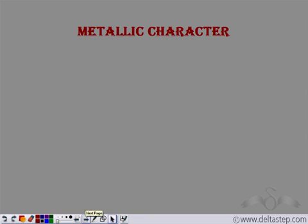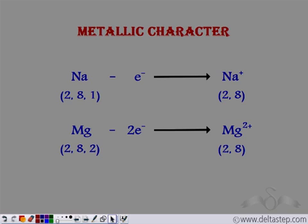One important property related to the elements is their metallic character. We know metals are those which can easily remove electrons to form positive ions. Sodium has electronic configuration 2-8-1, so it can easily lose the last electron to complete its octet, giving a stable configuration of 2-8. Similarly, magnesium has electronic configuration 2-8-2. It loses two electrons and forms a stable electronic configuration of 2-8, thus forming a positive Mg2+ ion. So metallic character is the ease with which atoms lose their electrons.